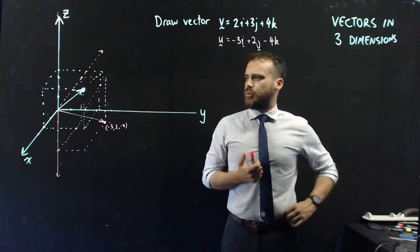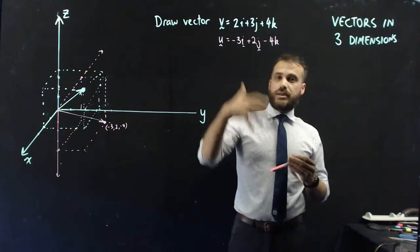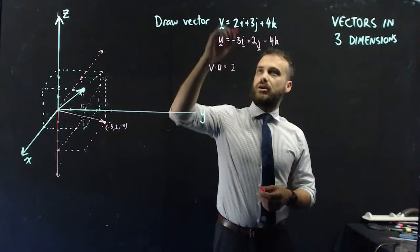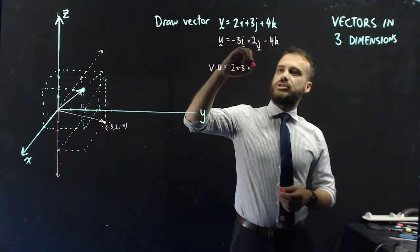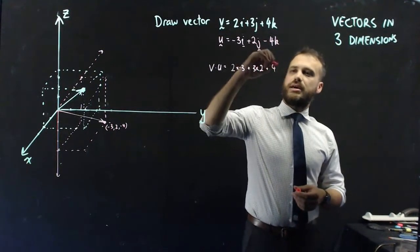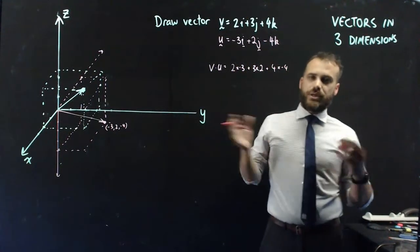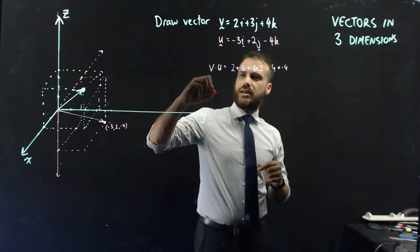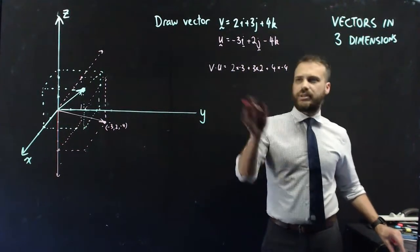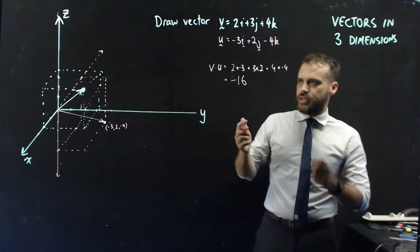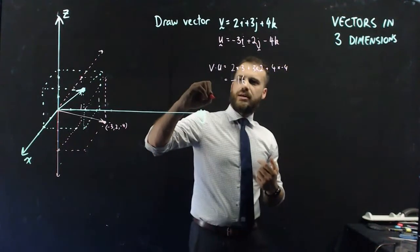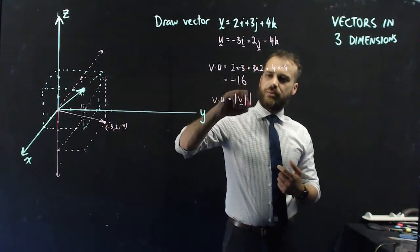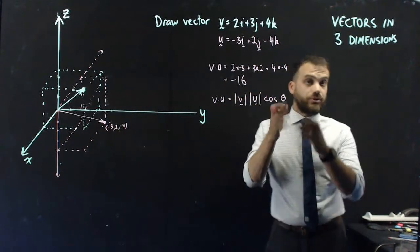What else could we do? We could do the dot product or scalar product between these two vectors pretty easily as well. So, if we wanted to do v dot u, it would just be the i components, 2 times negative 3, plus the j components multiplied together, plus the k components multiplied together. So, we can do a dot product really, really easily. We could also do the dot product in the other way. So, we could say that, well, actually, let's do that. Let's find out what that number is.